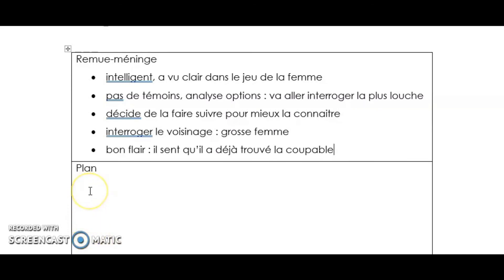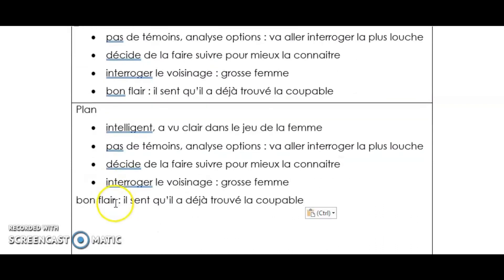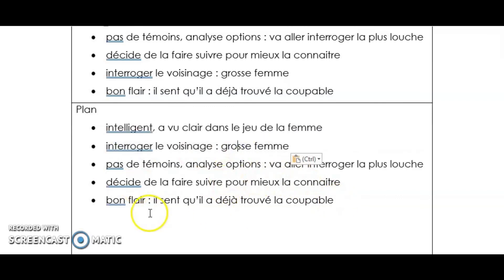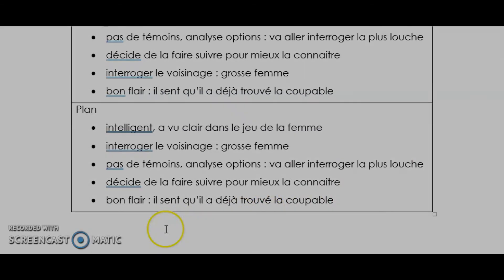Par contre, tu sais, tu dis que c'est un gars intelligent, puis là, il va tout de suite interroger la femme la plus louche. Il me semble que c'est pas une preuve d'intelligence. Si j'étais toi, là, je ferais interroger le voisinage avant. Ça fait que tu devrais déplacer l'idée, selon moi. OK. Donc, je mets interroger le voisinage avant ça, ici. Ouais, ouais, ouais. OK. Puis le reste, ben, moi je trouve ça bon, là. Ça fait que j'ai pas d'autres changements à faire? Non, moi je pense pas. Bon.